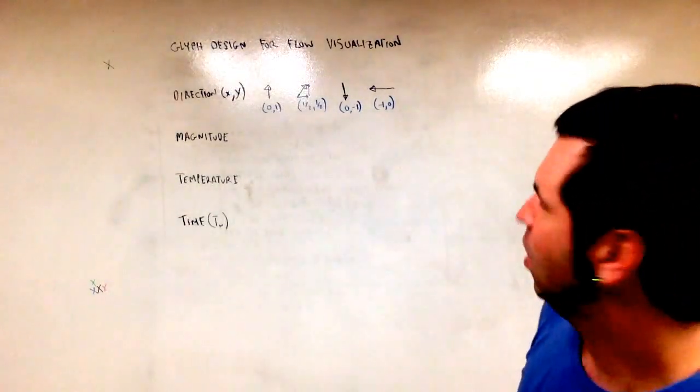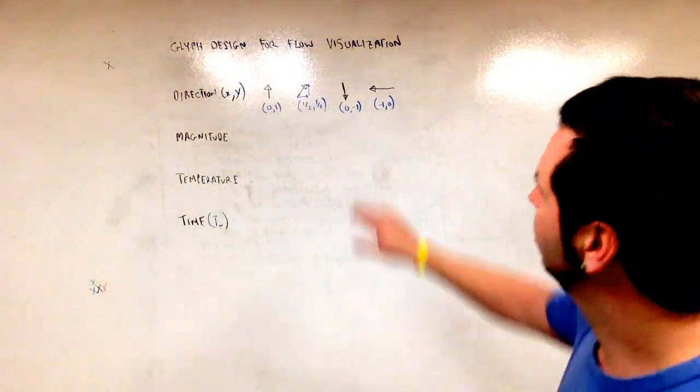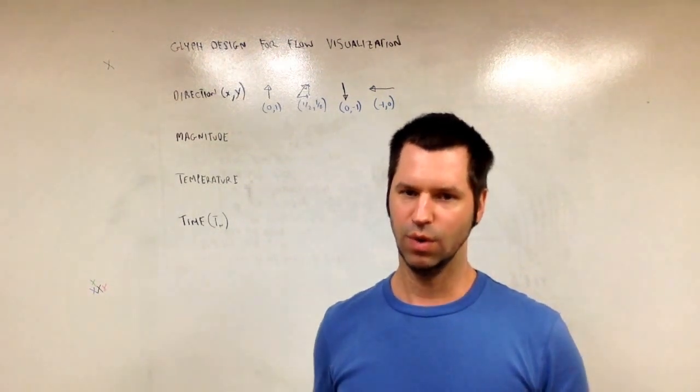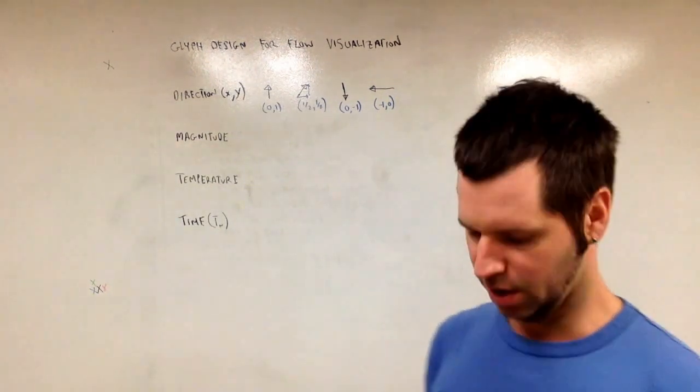And one thing to note is that all of those arrow glyphs have the same length. So it's just direction being encoded there.